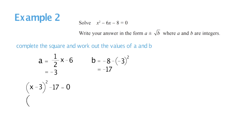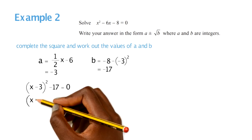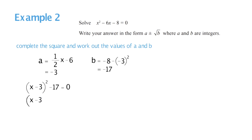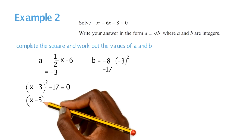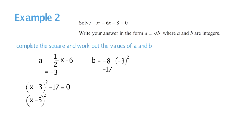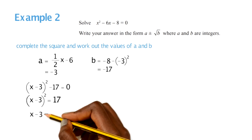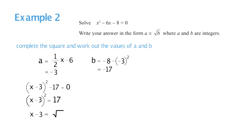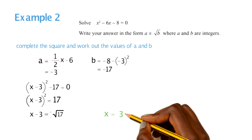Now use your knowledge of rearranging formulas. First, add 17 to both sides so x minus 3 squared equals 17. Then square root both sides, leaving x minus 3 equals root 17. Note that whenever you take a square root you always get a positive and negative result. Then add 3 to both sides, giving x equals 3 plus or minus root 17.